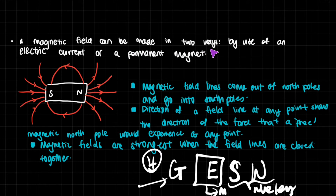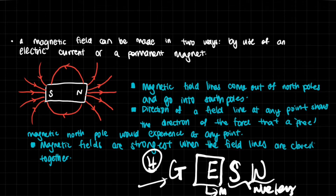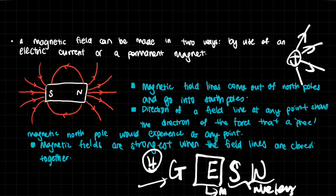Magnetic fields can be made in two ways: one by the use of an electric current, as with electromagnetism, or with a permanent magnet. This is a diagram of a quintessential permanently magnetized steel or iron magnet. The magnetic field lines represent the force field — they come out of the north pole and go into the south pole. This is just convention, just like with electric fields where positive charges come out. They don't actually look like this; you can't even see the force, but it helps us visualize things.